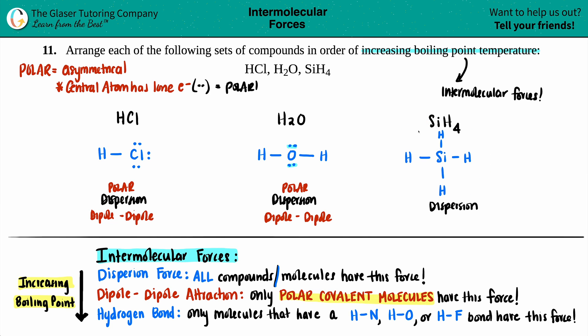But if I look at SiH4, I have a silicon in the middle surrounded by four hydrogens. The silicon has no lone pairs in the middle. So this would be classified as symmetrical and nonpolar. And nonpolar atoms do not have dipole-dipole.